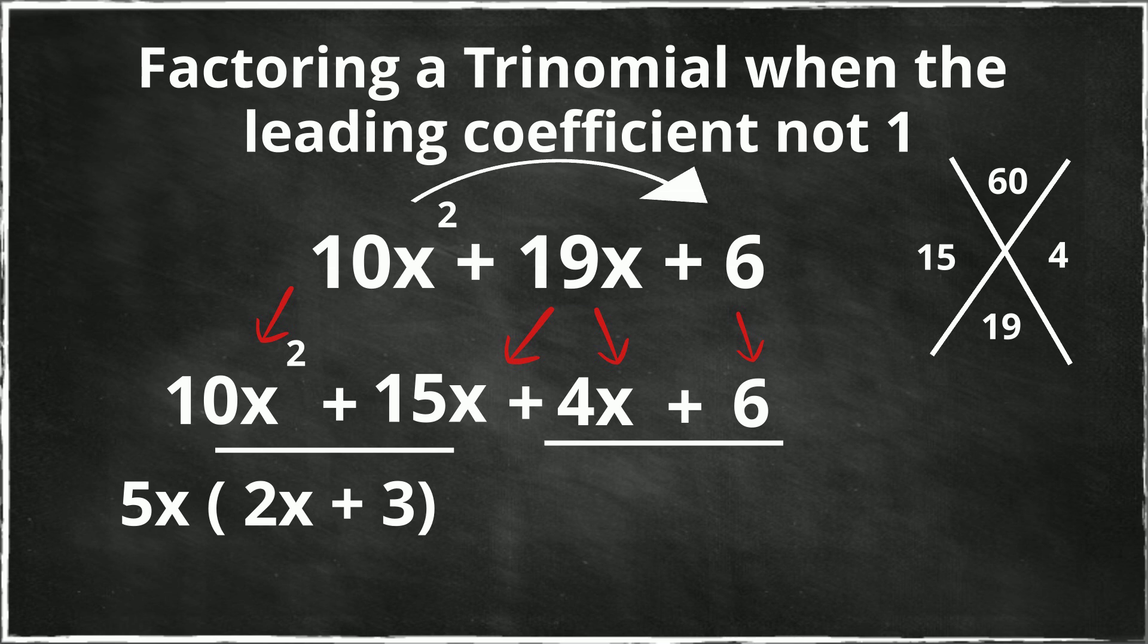And then the greatest common factor for 4x plus 6 is 2. So then when I factor it out, I go 2 times 2x plus 3. Now if you'll notice, whatever is in the parentheses, it should match. So I have 2x plus 3 and 2x plus 3.